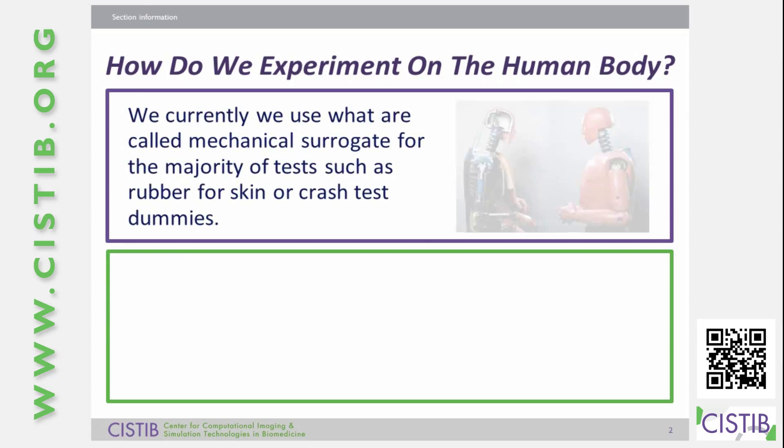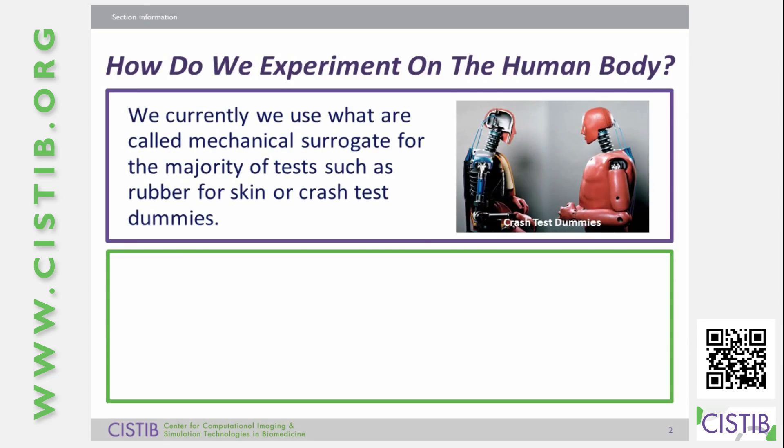How do we experiment on the human body? We experiment on the human body using surrogates. Surrogates are mechanical in nature, or have been for the past time, such as the car crash test dummy you can see on the screen, or examples of materials that are similar to humans, like plastics.